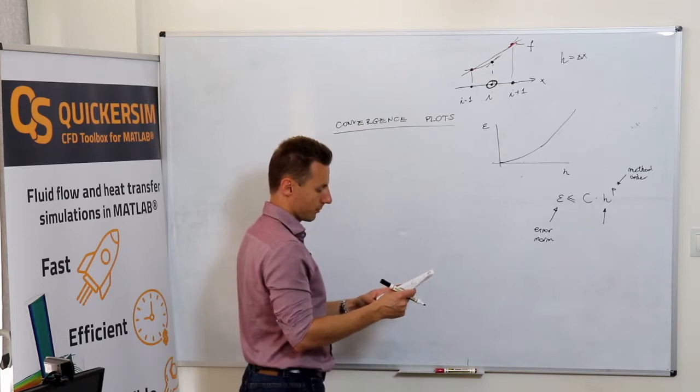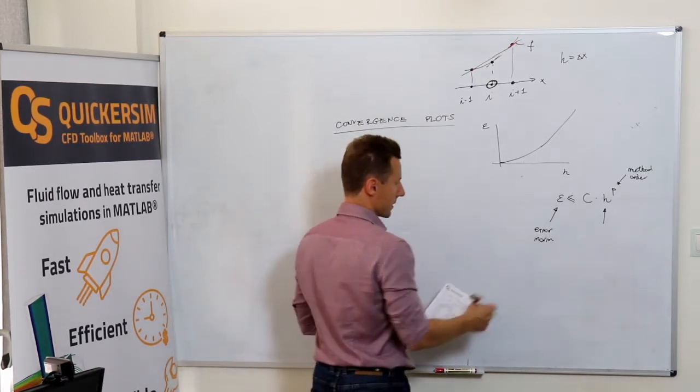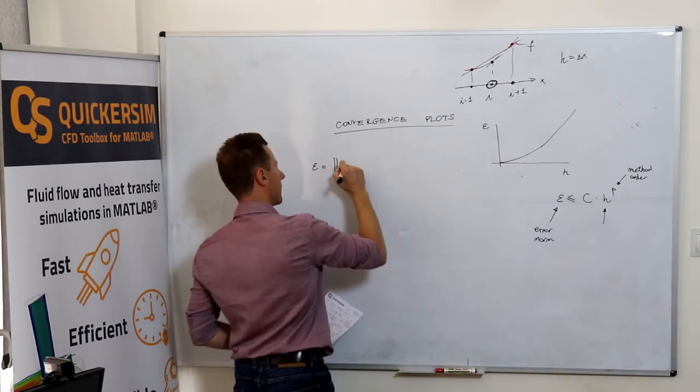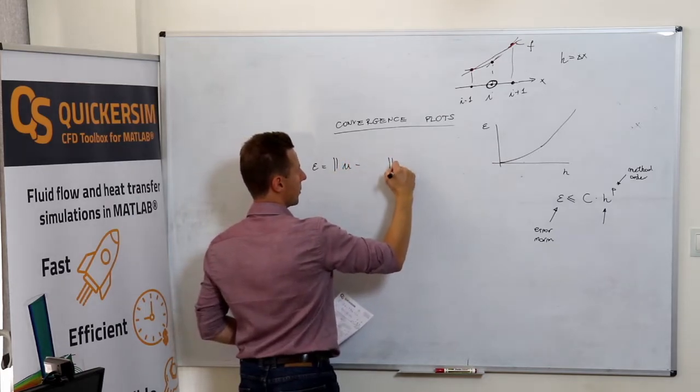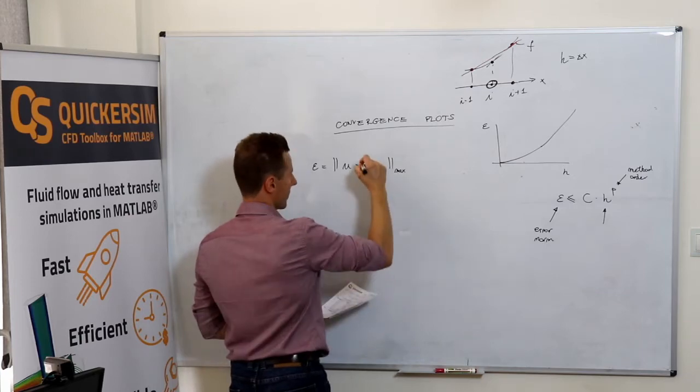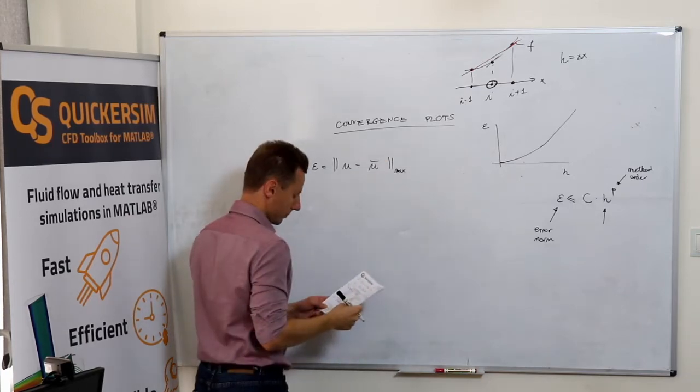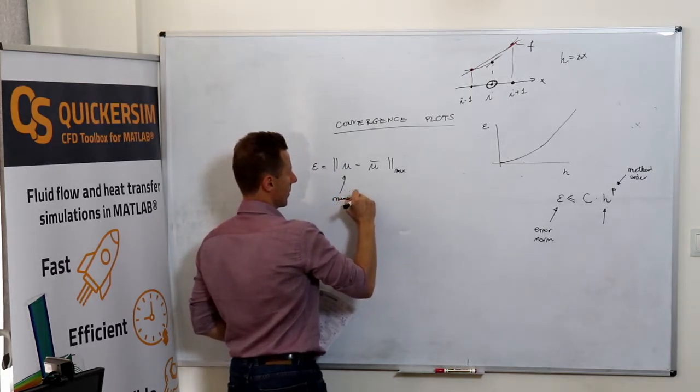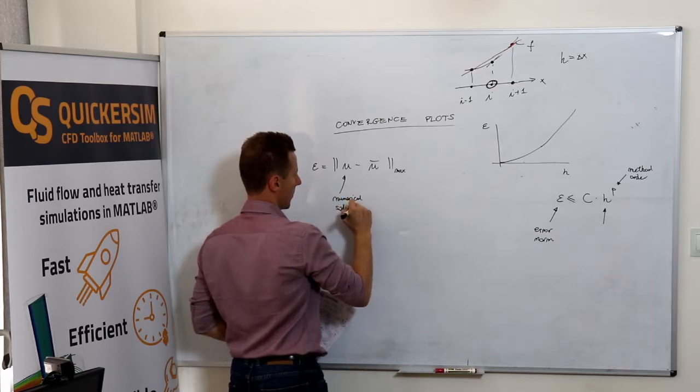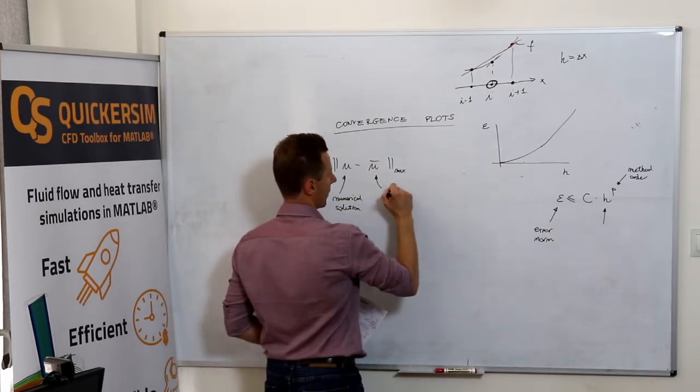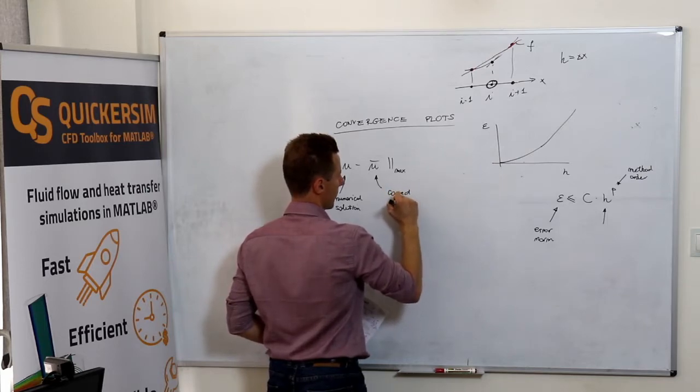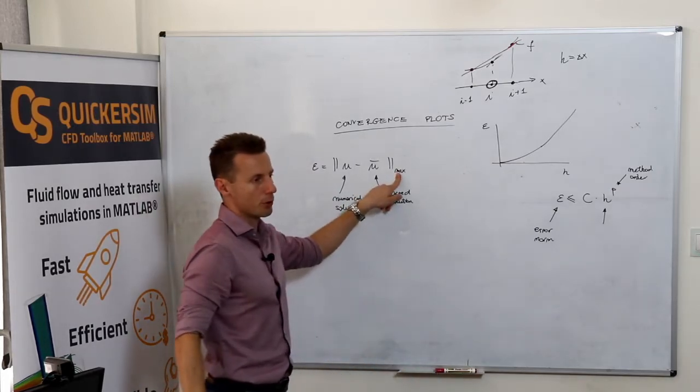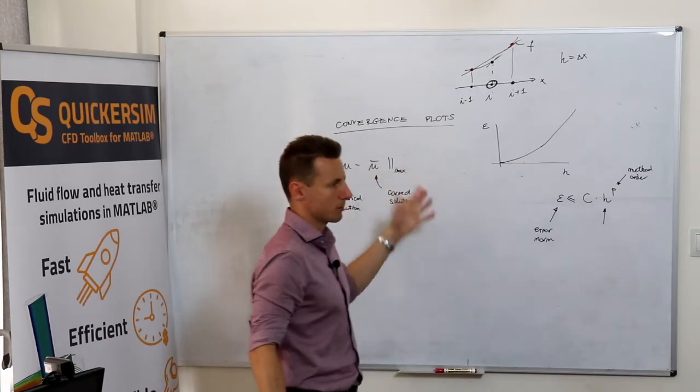What kind of norms can you use? Basically, epsilon can be defined, for example, as the maximum norm. Let's assume that this one is the numerical solution and this one is the correct solution.